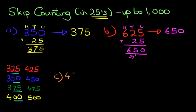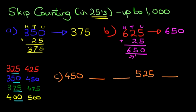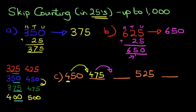Let's work through a number sequence. We've got 450, then three blanks, then 525, and another blank. What number appears in the first blank? We've got 450 — if it ends in 50, the next number has to end in 75. Because we've got 400s, it remains 475. And how about the number after that? We've got 475, so it's going to be 500 — it has to end in 0, and because we've got 4 here, the 4 turns into 5.